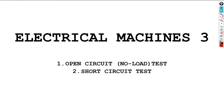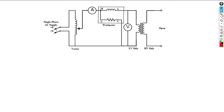So we already know what the equivalent circuit is, but now we're going to do some tests on the transformer to determine those losses. The first one is the open circuit test, which is basically a no-load condition. You have a variable supplier, an ammeter, a voltmeter, and a wattmeter, and the secondary side is open because it's a no-load condition.